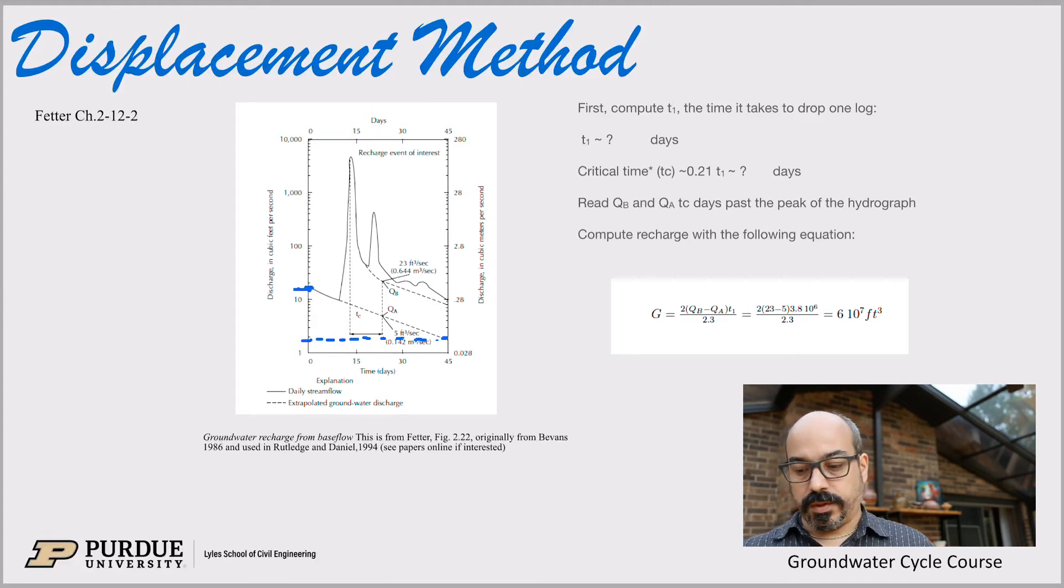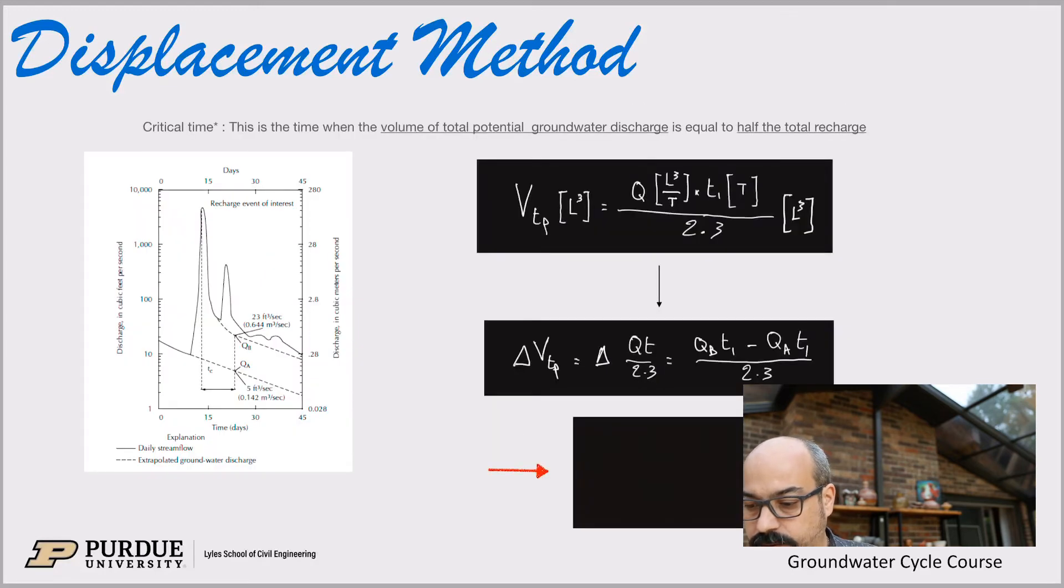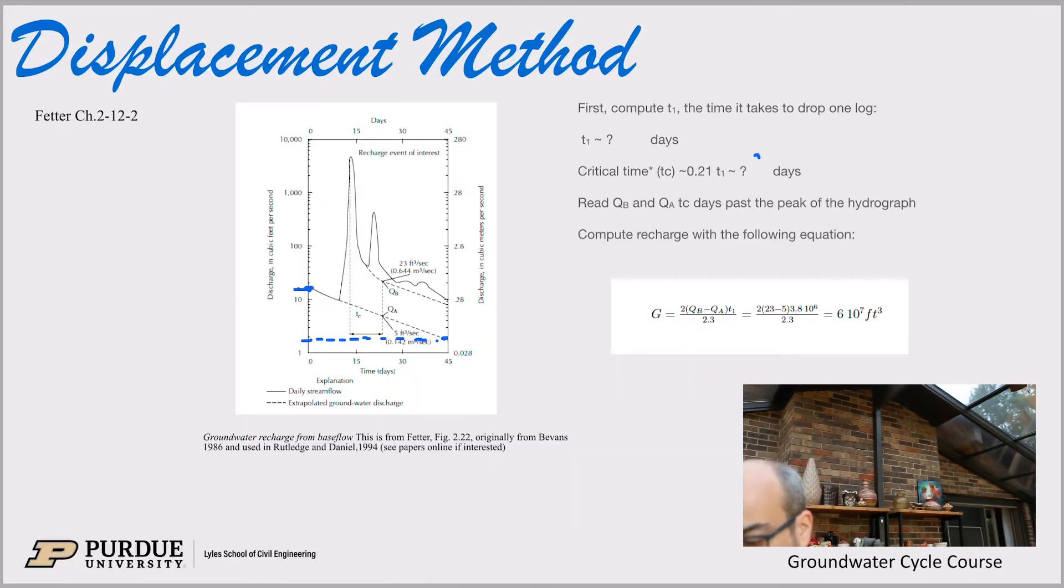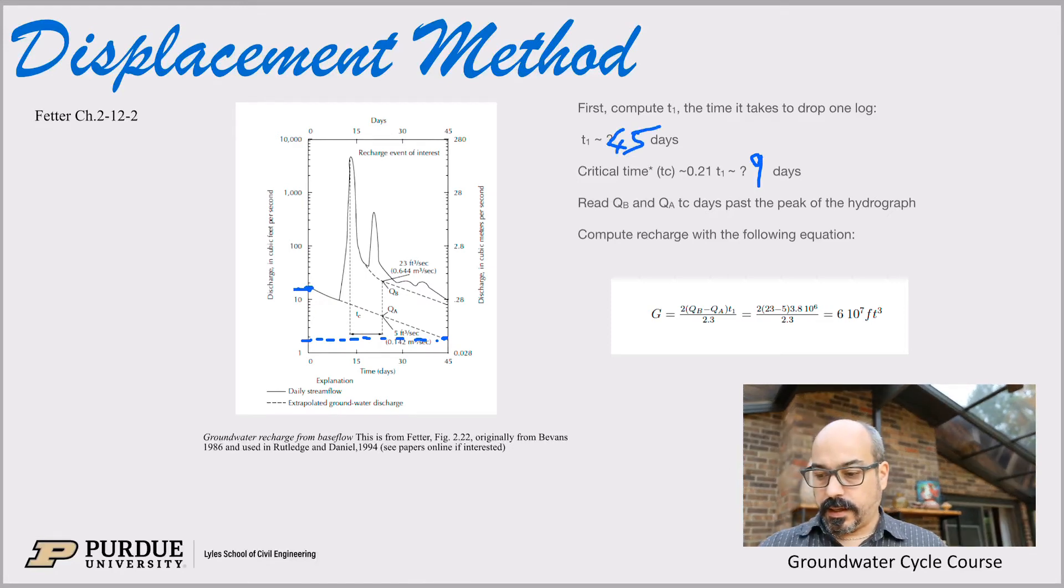So in this case, if you divide 45 days by 5, that gives you about 9. So you have 45 days for T1 and 9 days for TC.